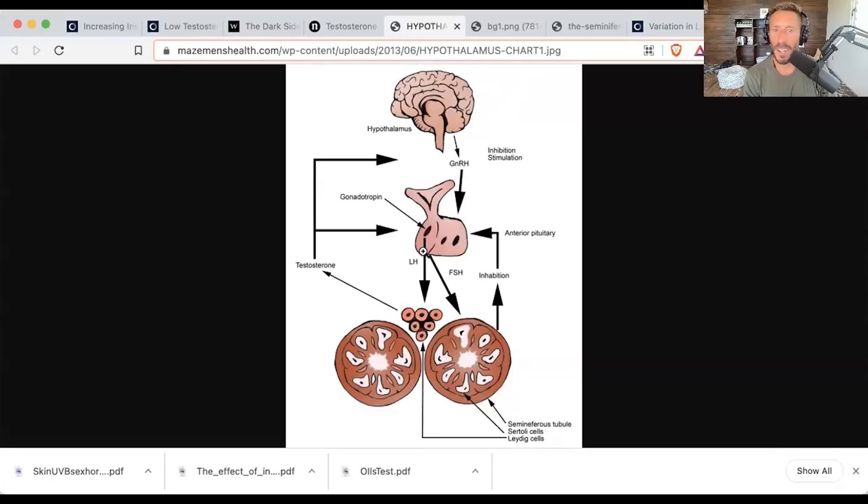GnRH signals to the anterior pituitary. There's a posterior and anterior pituitary, but in the anterior pituitary, there are two signaling molecules, two hormones released that travel through the body and end up in male's testicles or in women's ovaries or throughout the body of both men and women. These are LH and FSH, luteinizing hormone and follicle stimulating hormone.